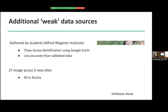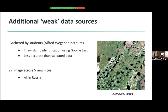During the summer school, I have access to additional data — weak data because it's labelled by students. It's not like the previous data where people actually went to the Arctic and gathered validated, accurate polygons. This is labelled using Google Earth Engine where students identify a lot of thaw slumps, so it's less accurate than the validated data. But there are 27 images across five new sites, all in Russia. In this study, I also used those sources to see if a model would perform better and generalize better by adding more weak data.